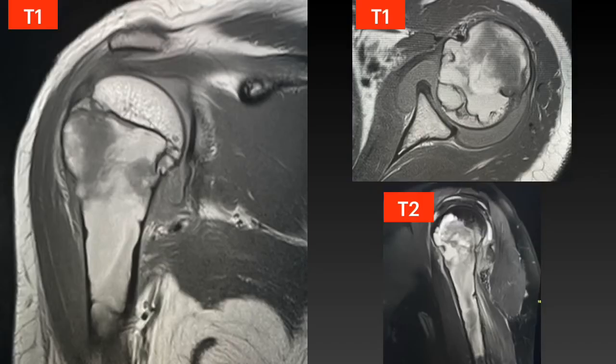MRI of this patient with T1 and T2 fat-suppressed images shows a large intraosseous lesion within the proximal humerus, which extends from the diaphysis, metaphysis, and into the epiphysis. The lesion crosses the growth plate. There is no normal bone trabeculae between the lesion and the physis.